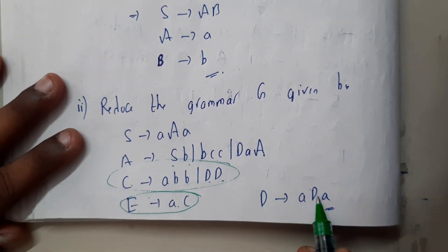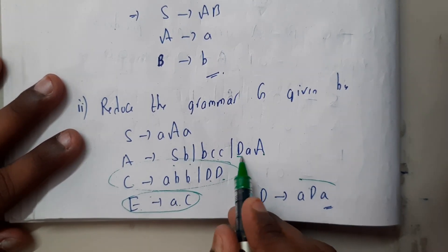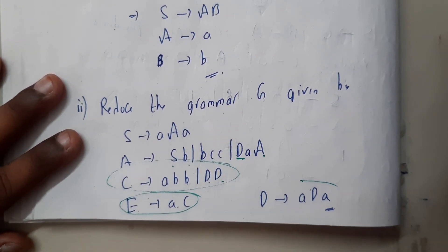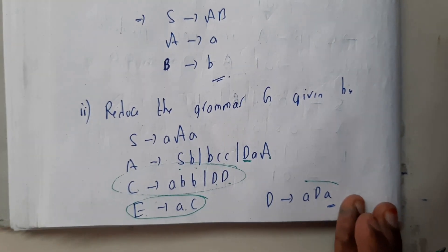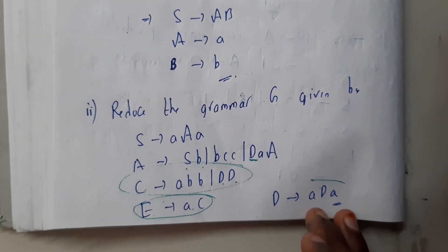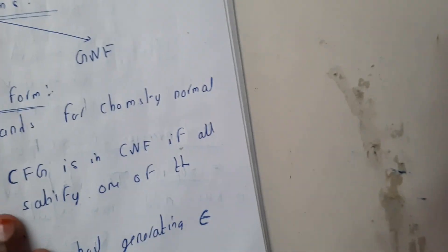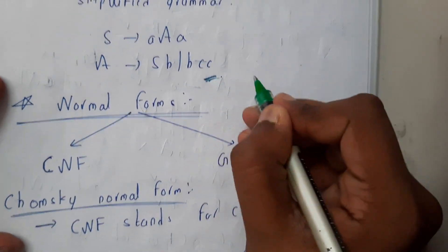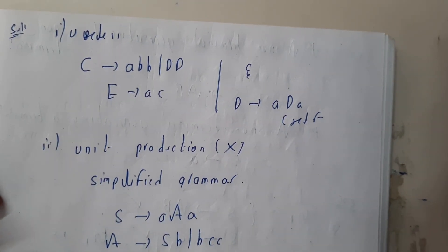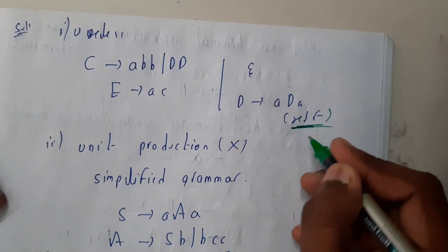And even this C also seems to be like a useless symbol, right? Yes, even C, because we are not using it anywhere. Even this D - okay, D is usable here. D tends to aDa, but it is going to an infinite loop, right? So even we should remove this also.